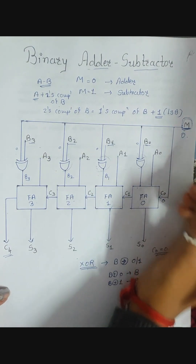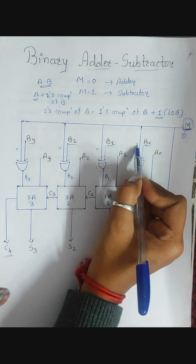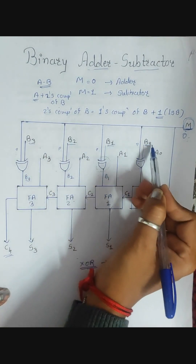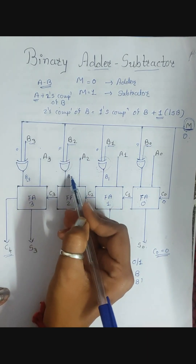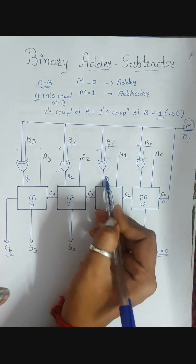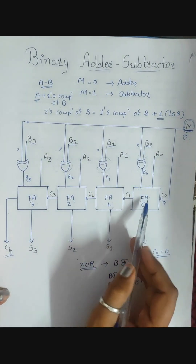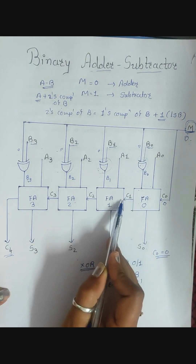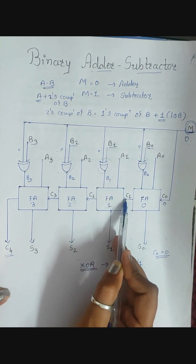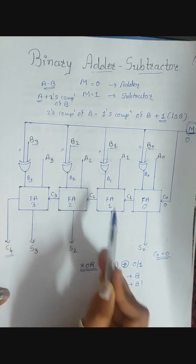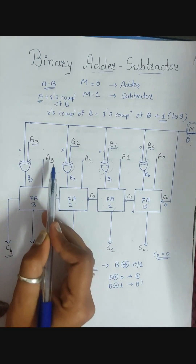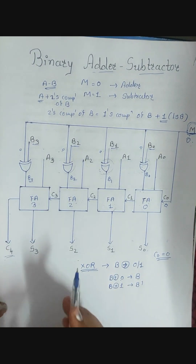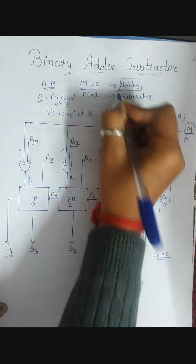If m is equal to 0, the initial carry is 0, and all second inputs of the XOR gates are 0. So B3 XOR 0 = B3, B2 XOR 0 = B2, B1 XOR 0 = B1, B0 XOR 0 = B0. Each full adder computes A plus B plus carry-in, giving A plus B overall. This means when m=0, the circuit works as an adder.